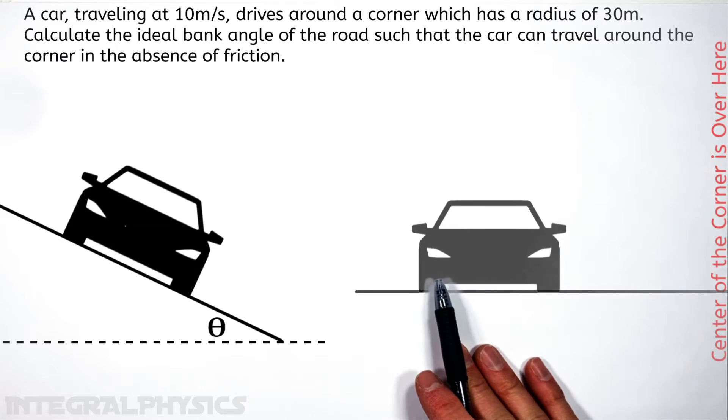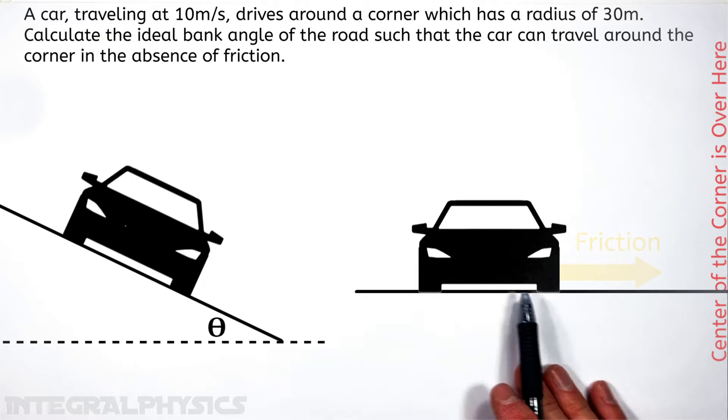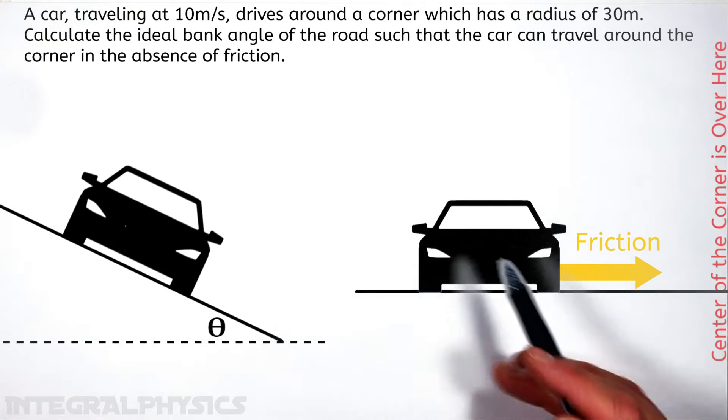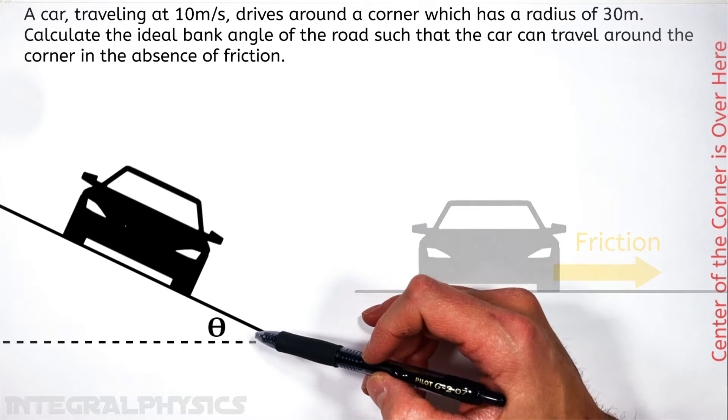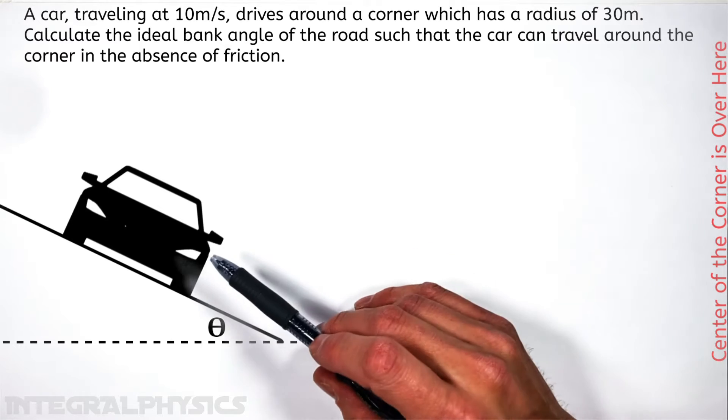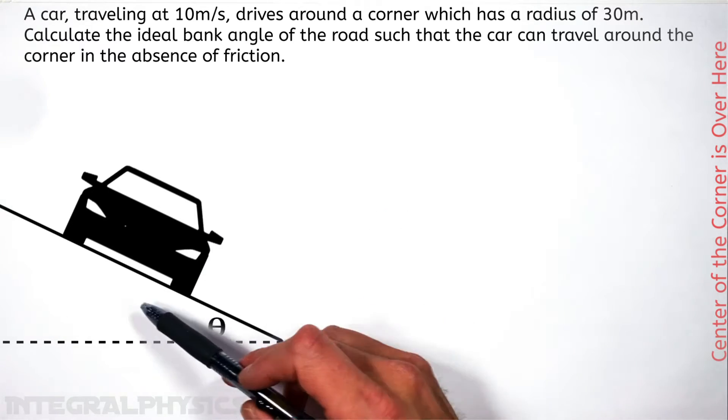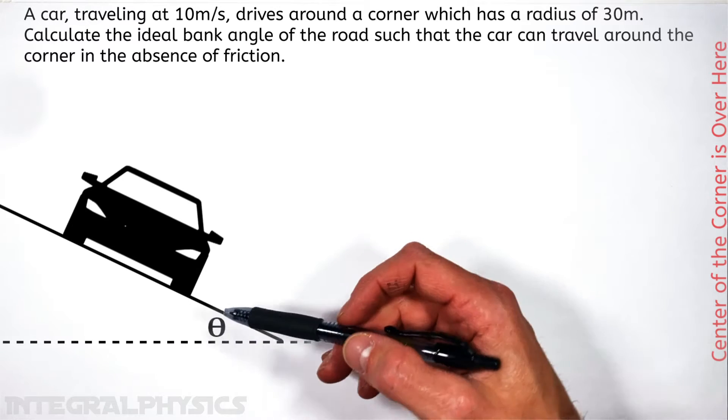You see, typically when a car goes around a corner on a flat road, it's friction which causes that car to actually be pulled inward around the corner. But if we angle this road, there doesn't need to be any friction between the tires and the road. So you could have the car go around this corner at speed even if the road was snowy or icy.